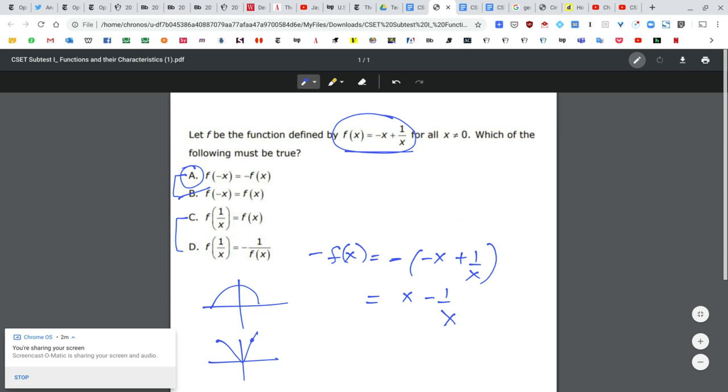C says f of 1 over x should be f of x. So I'm just going to replace every x with 1 over x.